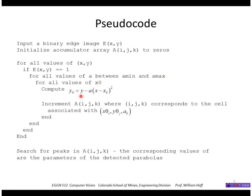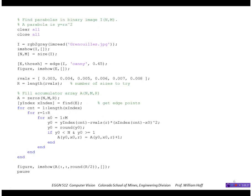And then compute the remaining parameter y0 and then increment the accumulator array corresponding to that triple of x0, y0 and a. And then finally search for peaks in the accumulator array and those represent the detected parabolas.